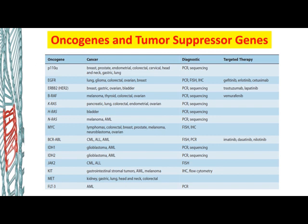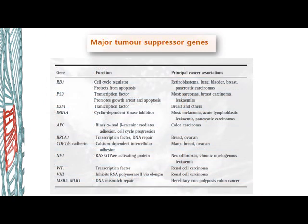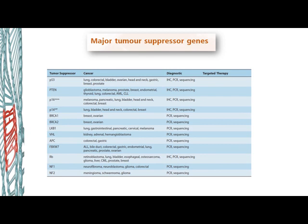Tumor suppressor genes — in this table, tumor suppressor genes RB1, P53, and others are listed. If they become abnormal, cancer is produced. For example, RB1 is a cell cycle regulator and involved in apoptosis — its mutation leads to retinoblastoma, which is an eye tumor, as well as lung, bladder, breast, or pancreatic cancers. P53 mutations lead to abnormal proteins, and diagnostic modalities are available to detect these mutations.